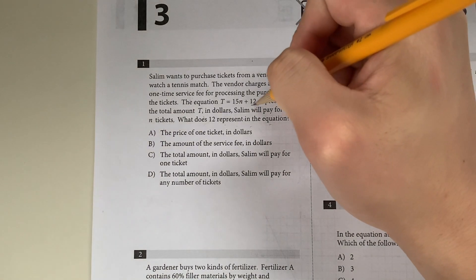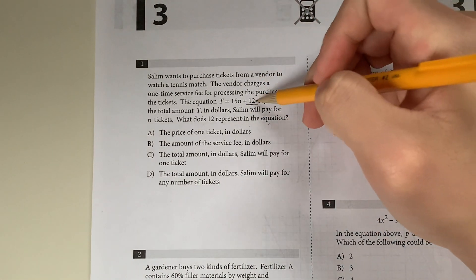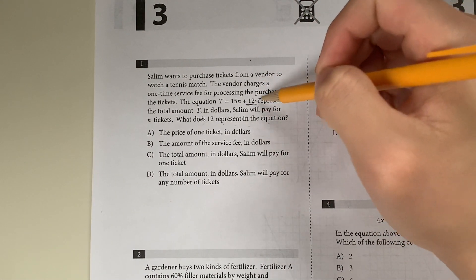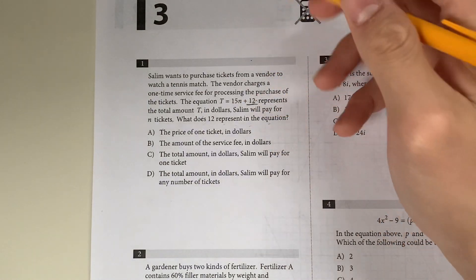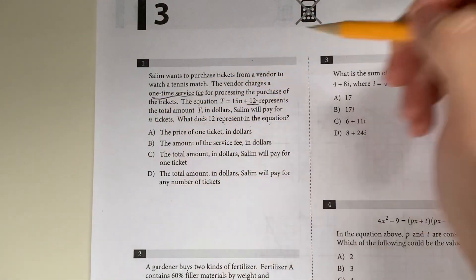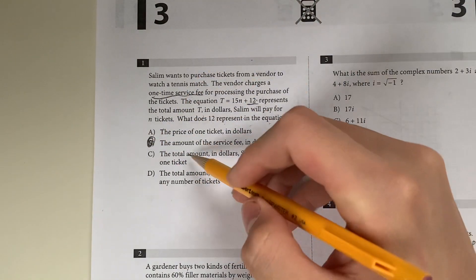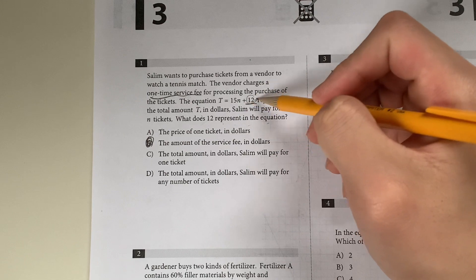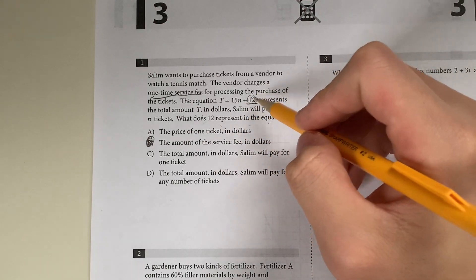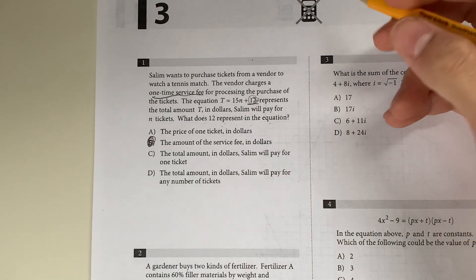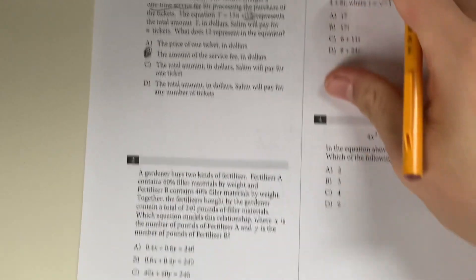What does 12 represent in the equation? Looking at the equation, you can tell that 12 is your y-intercept. Your y-intercept is always the base fee. So what is the base fee? It's the one-time service fee, so that's going to be your answer.